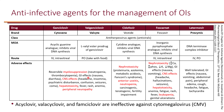Ganciclovir and valganciclovir also cause GI effects — nausea and vomiting — as well as CNS effects including headache and insomnia. Severe effects such as seizures and coma have occurred but are not common. They can also cause hepatotoxicity with mild elevation of liver enzymes, which is not as severe as the CNS effects and myelosuppression. Some patients experience fever, rash, anemia, and peripheral neuropathy.